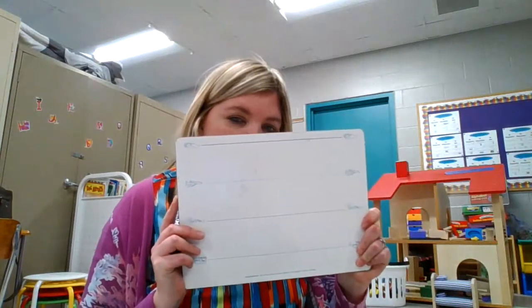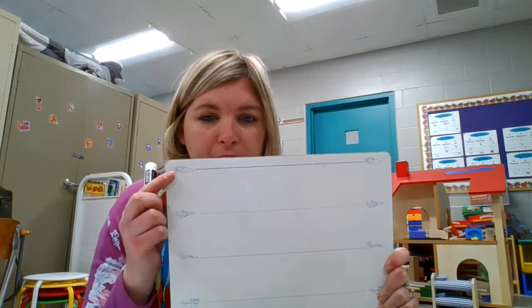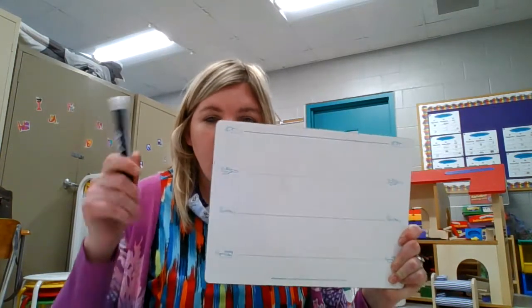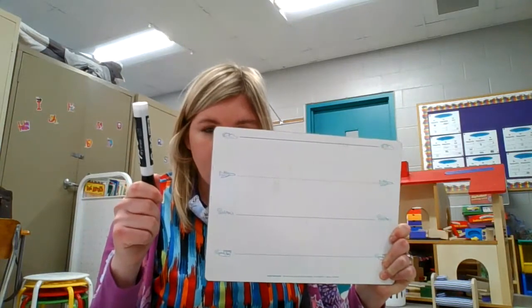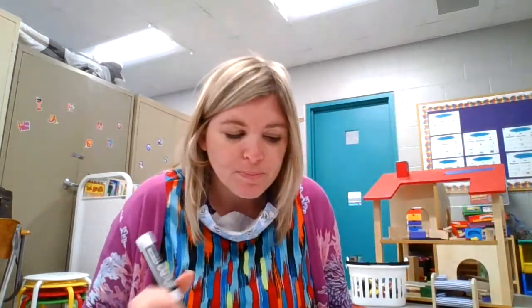So today we're going to practice writing these letters and make sure they touch the correct lines. What I want you to get out is your dry erase board — hopefully you still have this at home — where it has the sky, the plane, the grass, and the worm. Then get out a dry erase marker. Go ahead and pause the video to get those materials and come back.